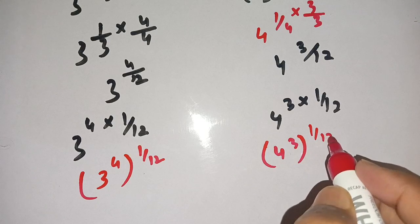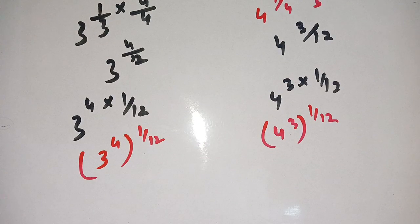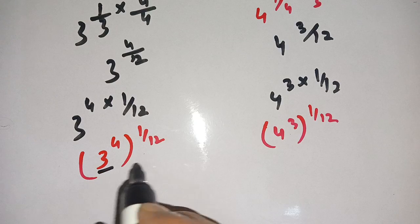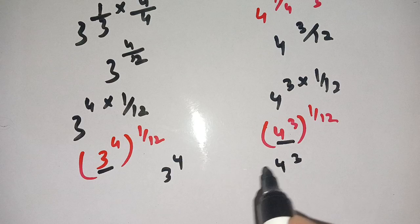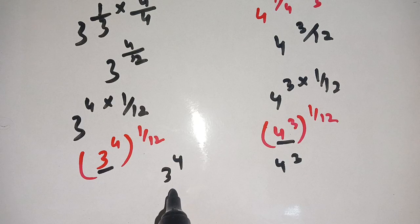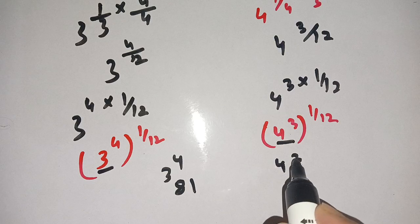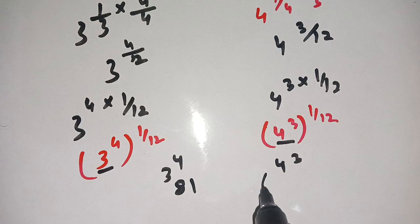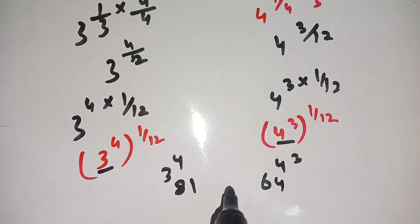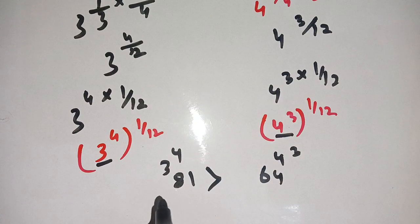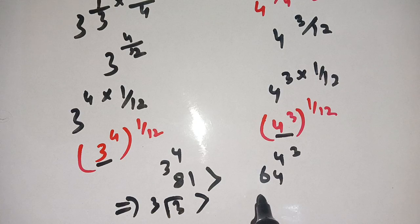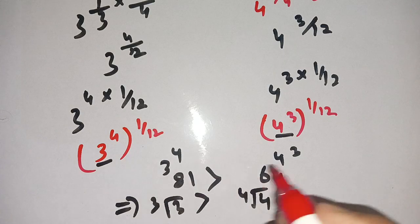We can now compare the base powers: three to the power of four versus four to the power of three. Three to the power of four equals 81, and four to the power of three equals 64. Since 81 is greater than 64, this implies that the cube root of three is greater than the fourth root of four.